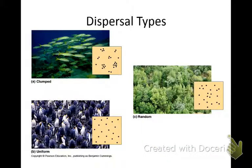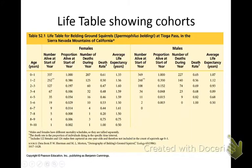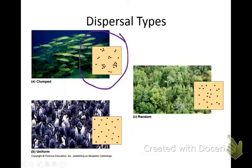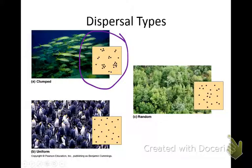Types of dispersion — draw these. Clumped is where organisms live clumped together, like in schools of fish or packs of wolves. They usually result from a need for nutrients, mating, and protection. Wolves travel in packs because they can protect each other and hunt together — they find it more beneficial to hunt together.